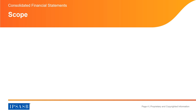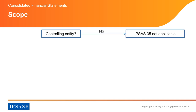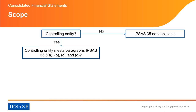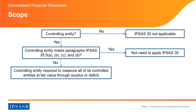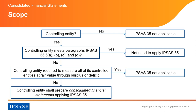Let's see what is the scope of IPSAS 35. The first question is whether the entity is a controlling entity. If not, IPSAS 35 is not applicable. If it is a controlling entity, we need to ask whether it meets all the conditions in paragraph 5a, b, c, and d. If yes, the controlling entity need not present Consolidated Financial Statements. If no, we need to determine whether the controlling entity that is an investment entity is required to measure all of its controlled entities at fair value through surplus or deficit according to paragraph 56. If yes, it shall not present Consolidated Financial Statements. If no, the controlling entity shall prepare Consolidated Financial Statements applying IPSAS 35.